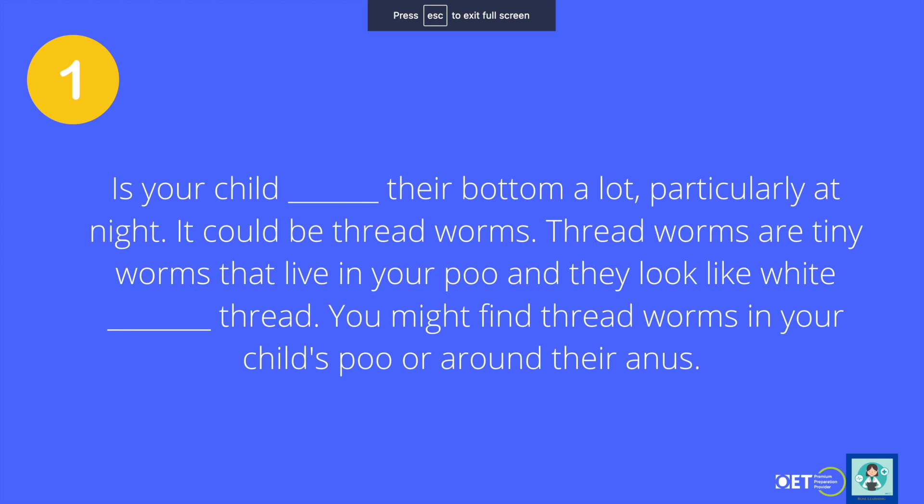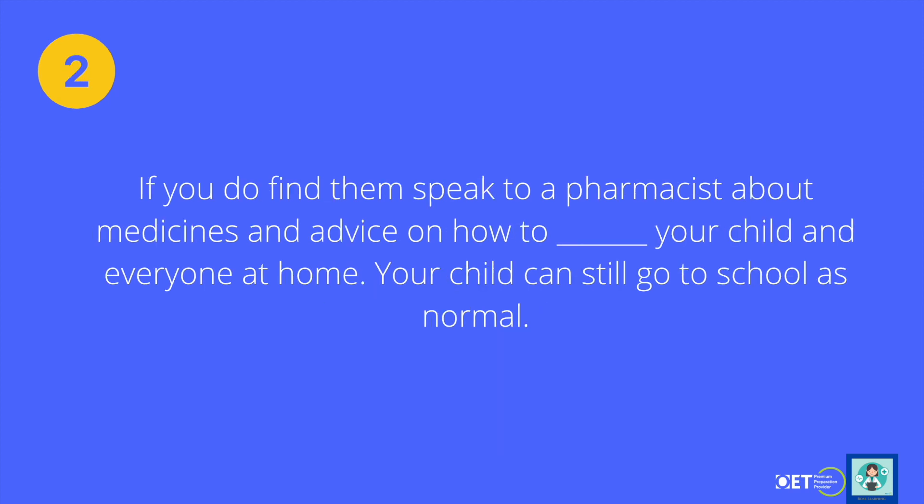Is your child scratching their bottom a lot, particularly at night? It could be threadworms. Threadworms are tiny worms that live in your poo and they look like white pieces of thread. You might find threadworms in your child's poo or around their anus. If you do find them, speak to a pharmacist for medicines and advice on how to treat your child and everyone at home.